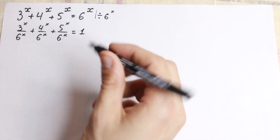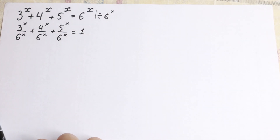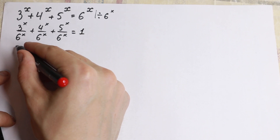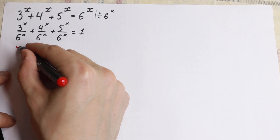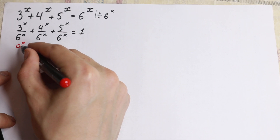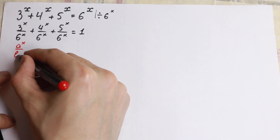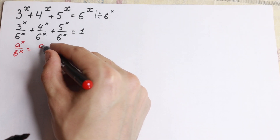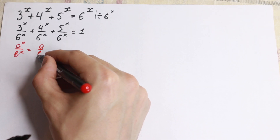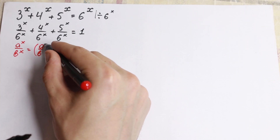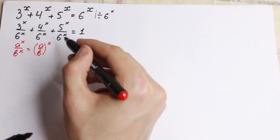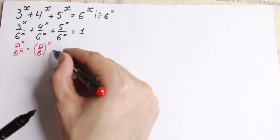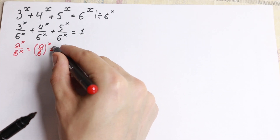The next thing we need is to know this rule: if we have a to the x over b to the x, we can write it in one parenthesis as a over b, all raised to the power x. Let's use this rule right here.